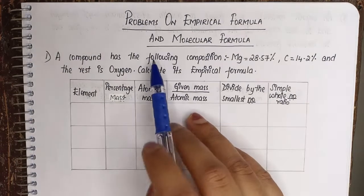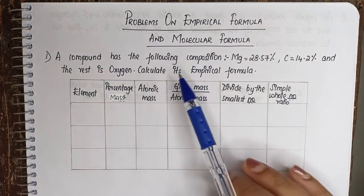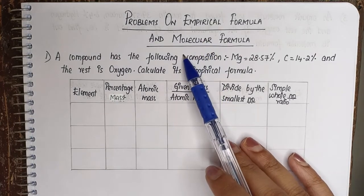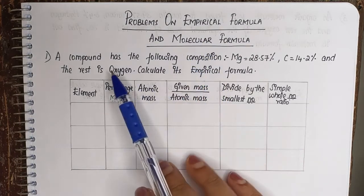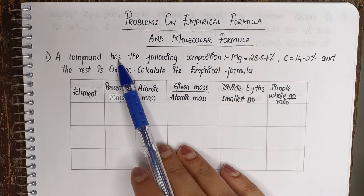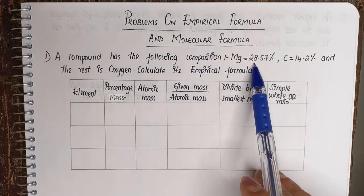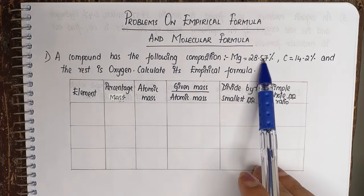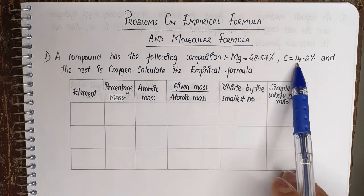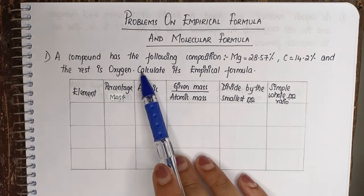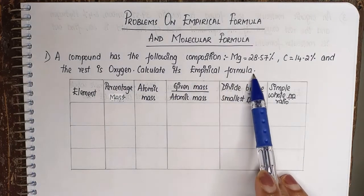Hello everyone. So in this video we are going to cover problems related to empirical and molecular formula. The first question is: a compound has the following composition - magnesium 28.57%, carbon 14.2%, and the rest is oxygen. Calculate its empirical formula.